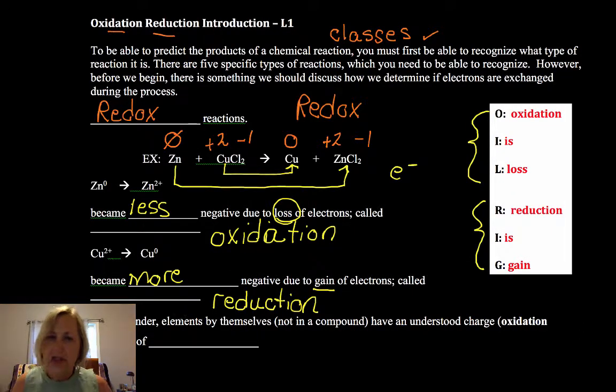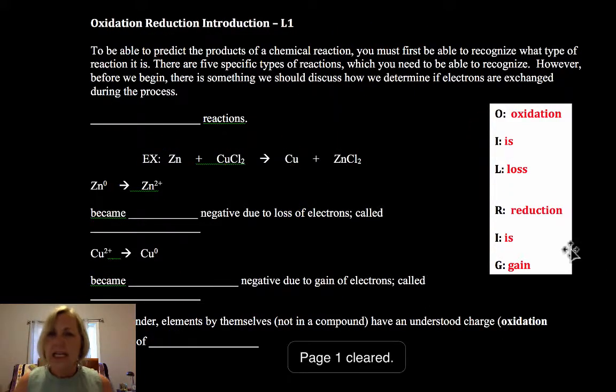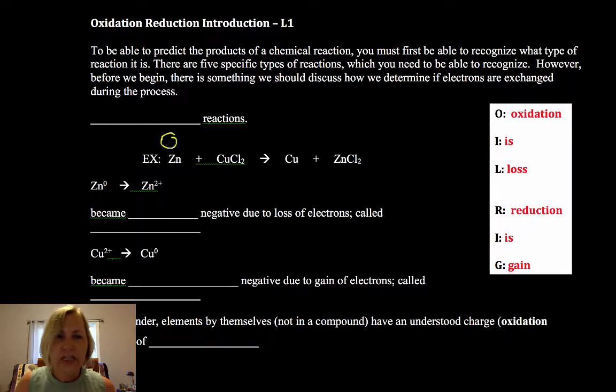Just as a reminder, elements by themselves always have an oxidation number of zero, not in a compound. So a quick way you can evaluate this if you're not asked for the specific oxidation number is look for elements by themselves and then going into a compound. The zinc here is zero and in a compound it's not zero. So yes, either oxidation or reduction occurred.